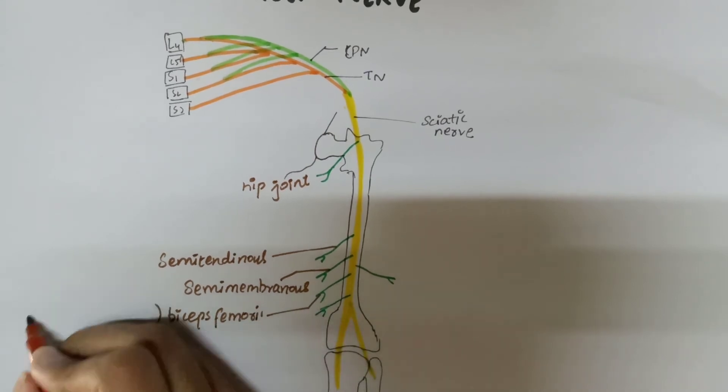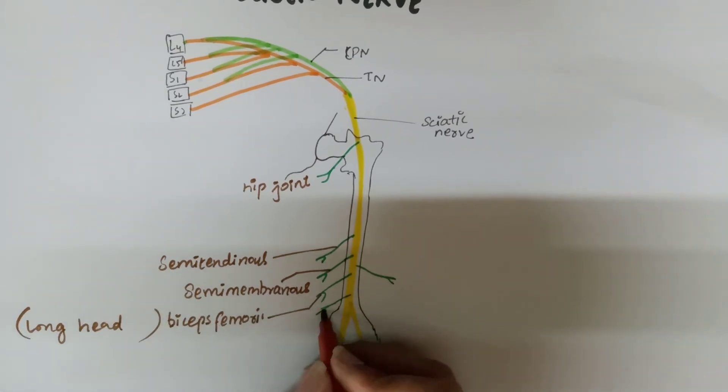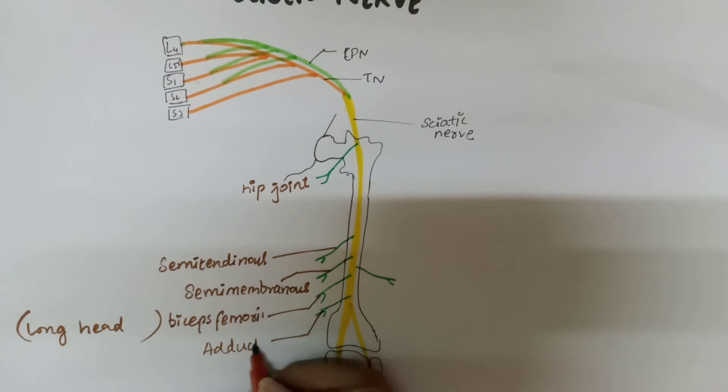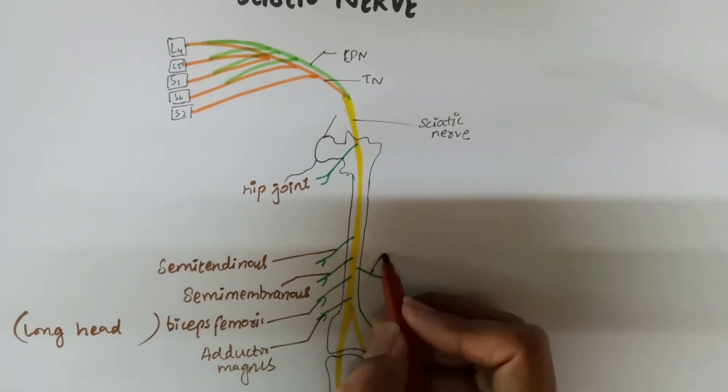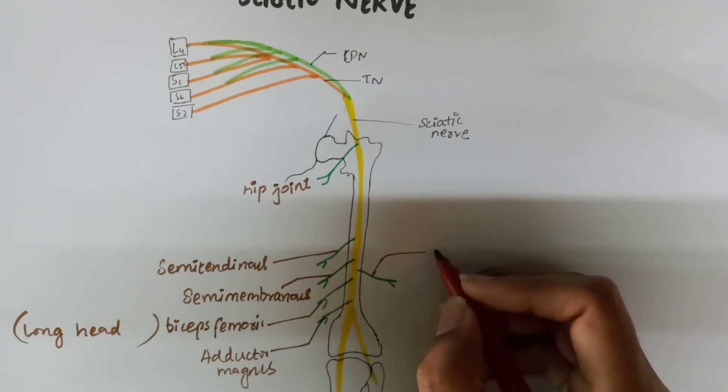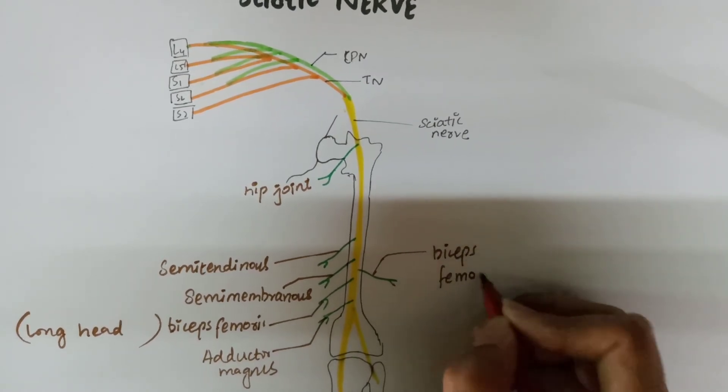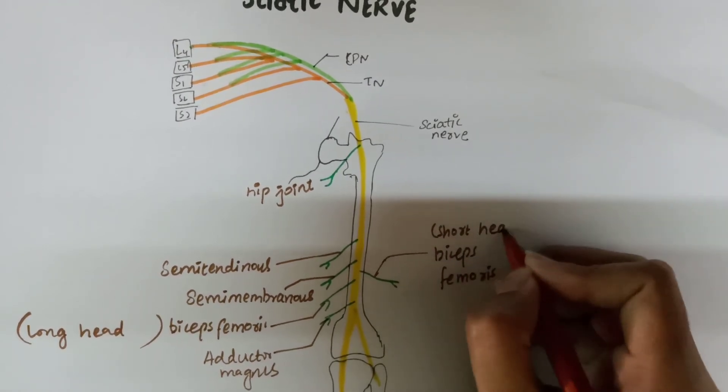The fourth one goes to the adductor magnus, and the fifth one goes to the short head of biceps femoris.